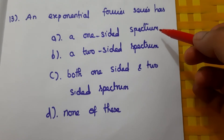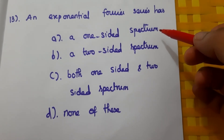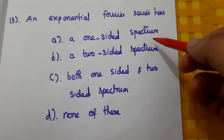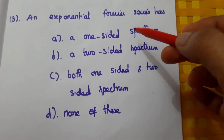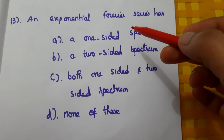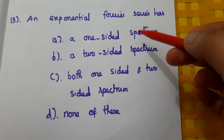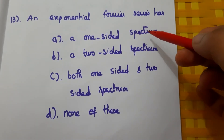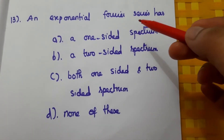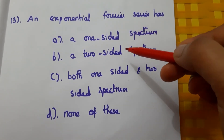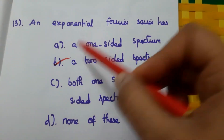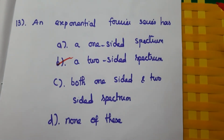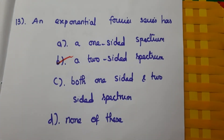Thirteenth question: an exponential Fourier series has a two-sided spectrum, while the trigonometric Fourier series has a one-sided spectrum, as discussed earlier. So here the answer is A — two-sided spectrum.